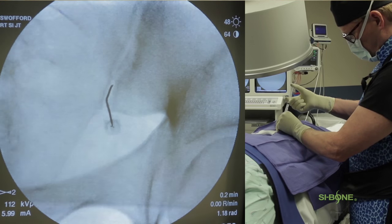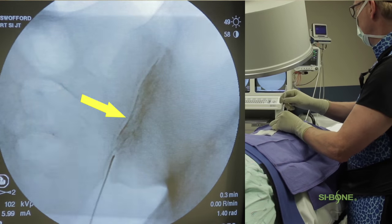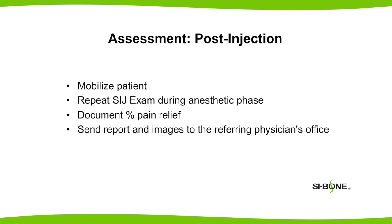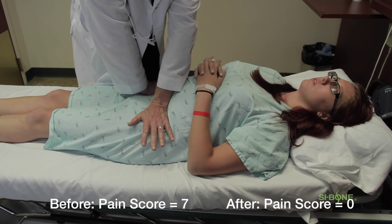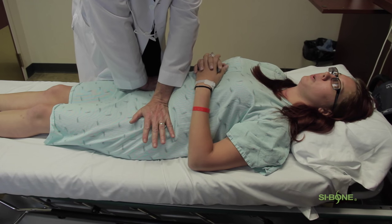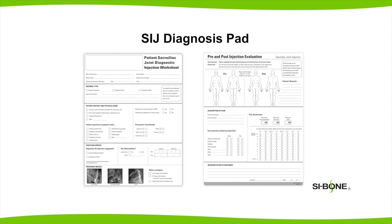In a successful arthrogram, you'll see the dye flowing readily through the confines of the joint. If you're periarticular, you'll see contrast staying close near the needle tip in somewhat of a smudged pattern. The last pattern you might see is a venous or vascular pattern, which would indicate that your needle is in bone. After I perform the injection, I mobilize the patient — this allows the anesthetic to distribute within the joint. Then I re-perform the functional testing and provocative testing, looking for 75% or greater reduction in their SI joint-specific pain.